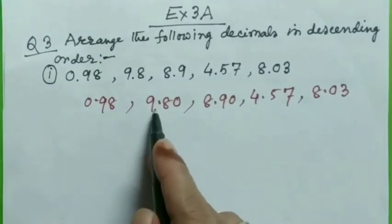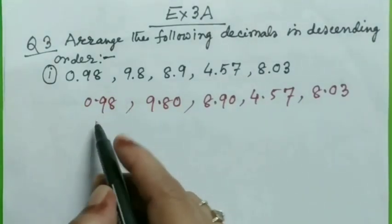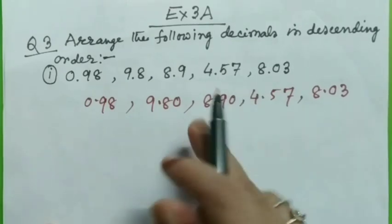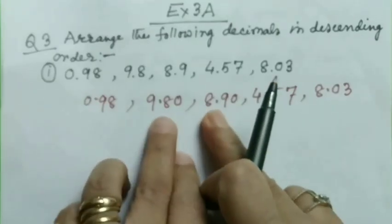And so here 9.89 is greater, greatest one. So I will write 9.80 is the greatest one.